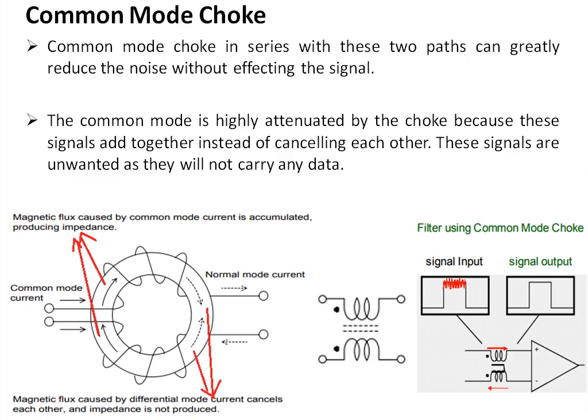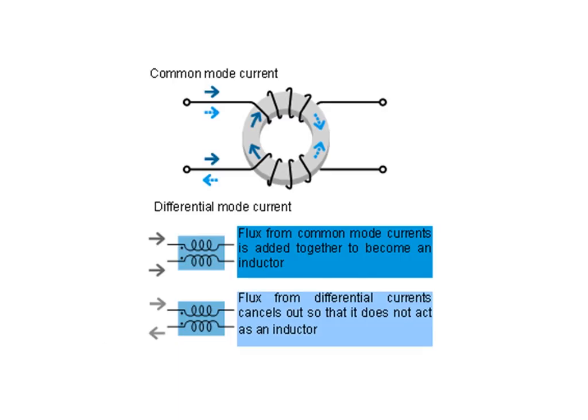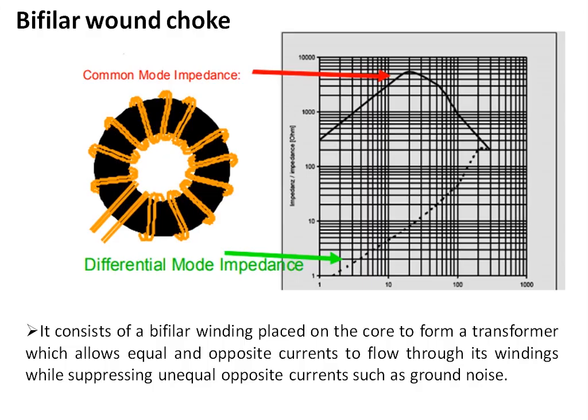For a differential signal, the currents are in opposite directions, so the net flux is zero because the fluxes cancel each other. The differential signal will not be affected by the common mode choke. The flux from common mode current adds together to create inductance, whereas the flux from differential current cancels — so the choke does not act as an inductor for the differential signal; it acts just as a wire. A typical impedance versus frequency characteristic shows very minimum impedance for differential mode signal and very high impedance for common mode signal, effectively attenuating it.